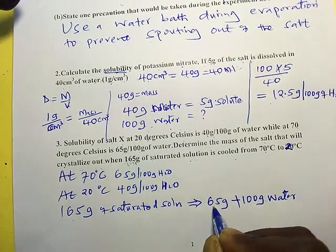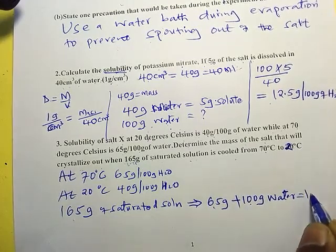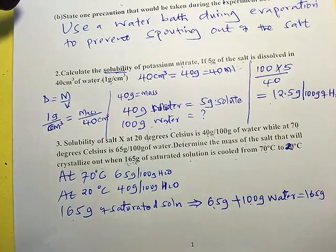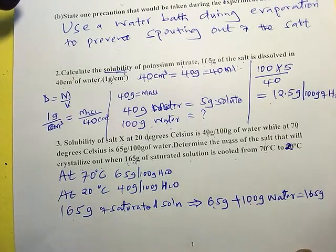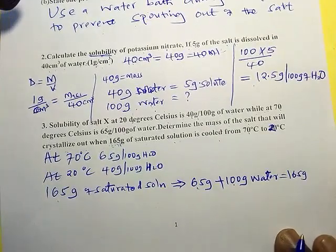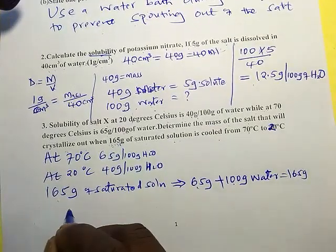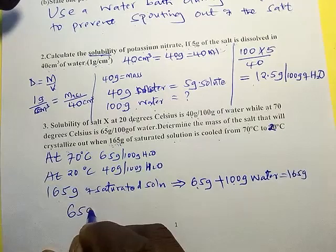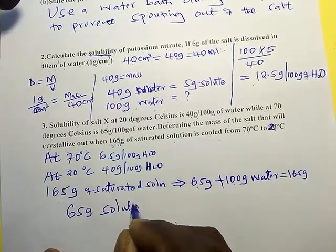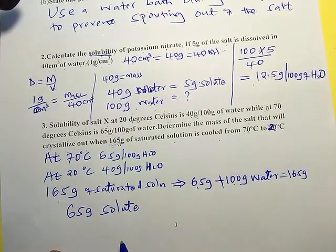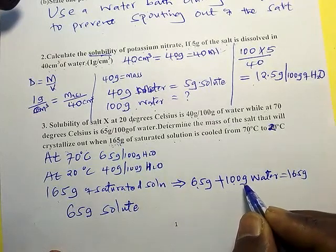So that's 65 plus this one, the answer is 65 grams. Are we together? I hope so. So now it means that we have 65 grams of the solute dissolved in 100 grams of water.